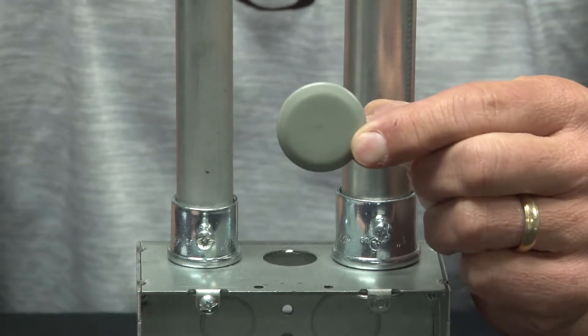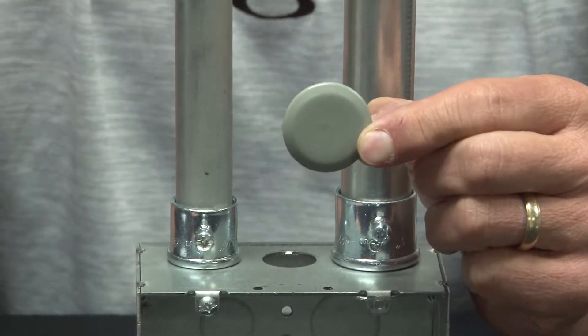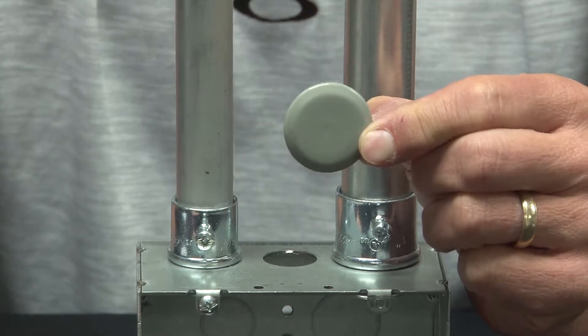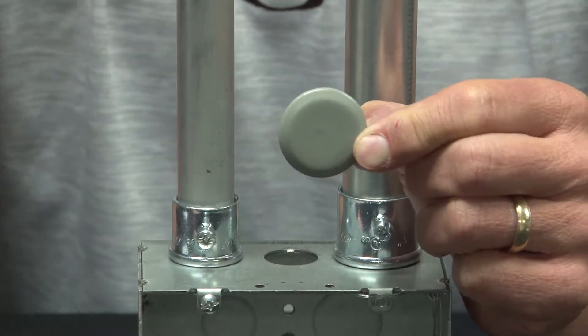In many industrial settings, when a knockout is removed unintentionally, it's important that you close it up with an oil-tight knockout seal.